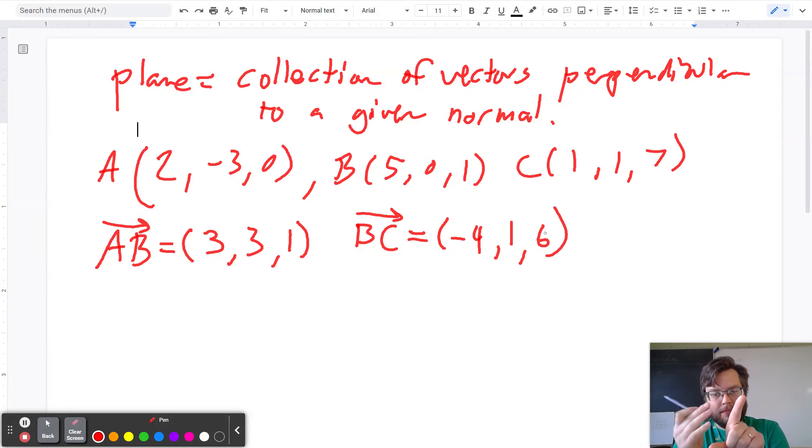AB and BC are two vectors that lie in the plane. So I want to find the vector that's normal to them, so I do the cross product.